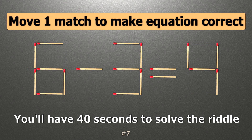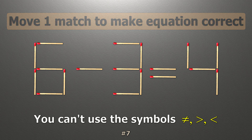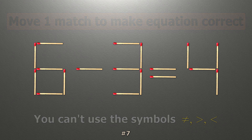We have the equality 6 minus 3 equals 4. Our equality is wrong. We need to move one match to make our equality correct.